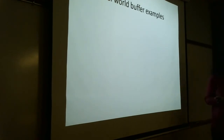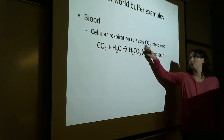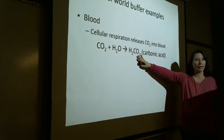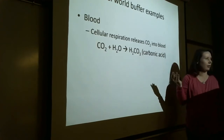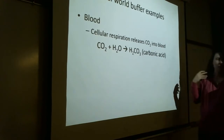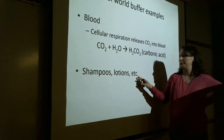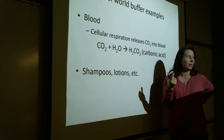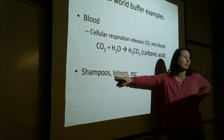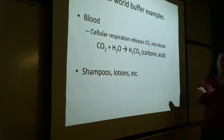Some real-world examples of buffered systems: blood — when we carry out respiration at a cellular level we release CO₂, which forms carbonic acid, and your blood pH can't vary all over your body without serious consequences. Shampoos and lotions also contain buffers — weak acids and bases — to resist bacterial growth by keeping the pH from reaching the optimal level for bacterial growth.